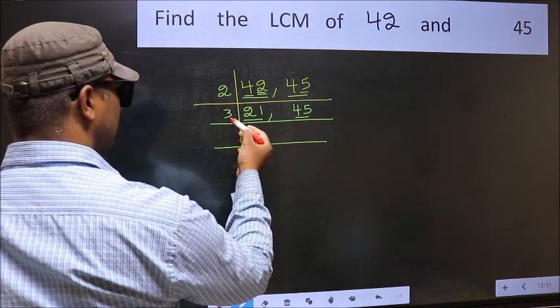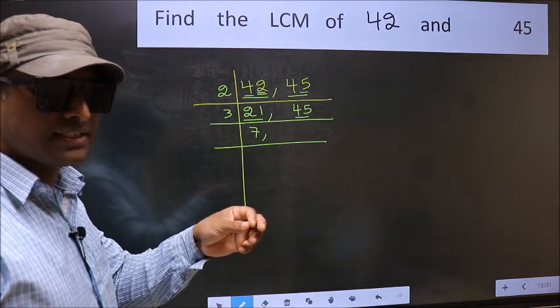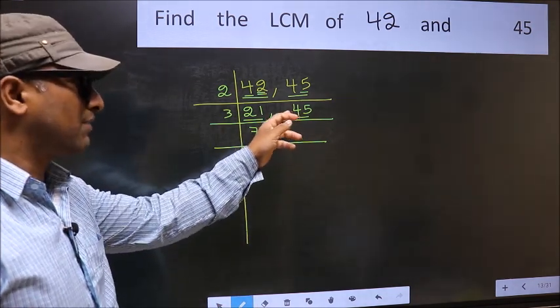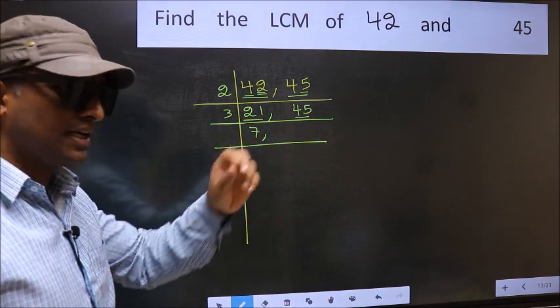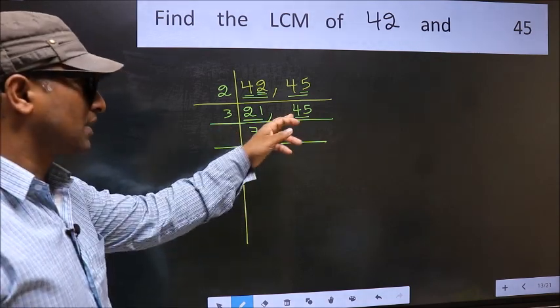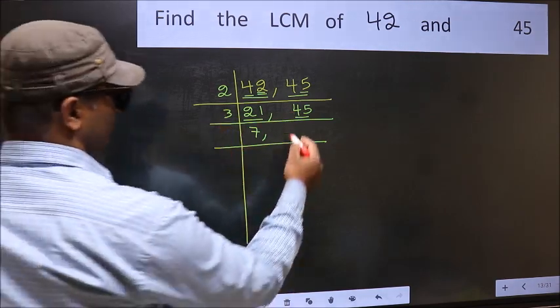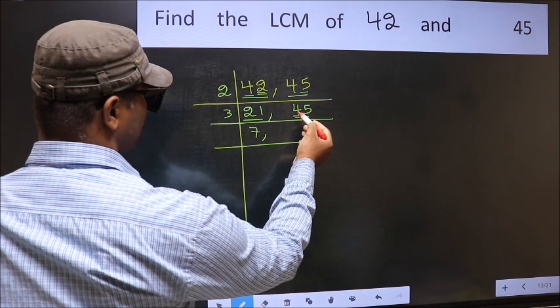Add the digits: 4 plus 5, we get 9. And 9 is divisible by 3, so this number is also divisible by 3. The first number is 4. A number close to 4 in the 3 table is 3 times 1 is 3. 4 minus 3 is 1, 1 carried forward. 15. When do we get 15 in the 3 table? 3 times 5 is 15.